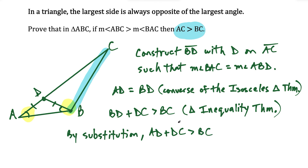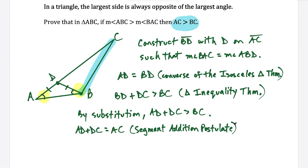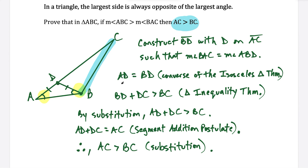AD plus DC is greater than BC. But AD plus DC gives us the entire length of AC by the segment addition postulate — when we add these two parts together it gives us the entire line segment. Therefore, AC is greater than BC. This concludes the proof. This theorem is a two-way street: the largest side is always opposite of the largest angle, and the largest angle is always opposite of the largest side.